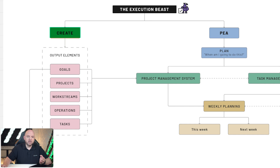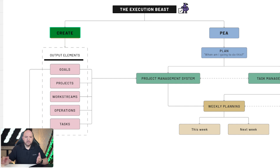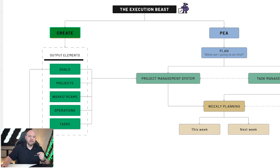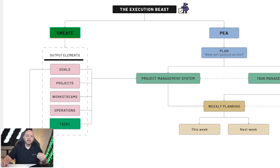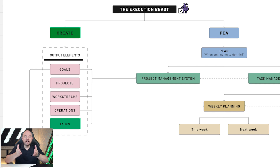Let's start with Create. Here you see the output elements — goals, projects, work streams, operations, and tasks. The only important thing to keep in mind is that tasks is the only entity that is actionable. That's the point where you actually do things. All the others are just containers holding tasks. And if a task becomes too complex, you can add subtasks, making the task itself a container while the subtasks become the only actionable items.